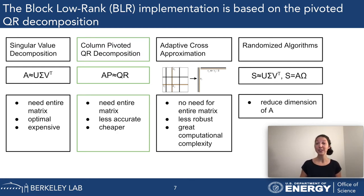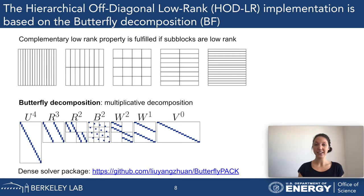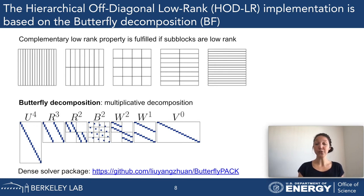What we need to know for this talk is that we use the column-pivoted QR decomposition for the blocks of our block-low-rank compression. For HODLR—the hierarchical off-diagonal low-rank format—we use the so-called butterfly decomposition as our compression method for the off-diagonal blocks of the frontal matrix, which is motivated by and serves as a good compression method for high-frequency problems.